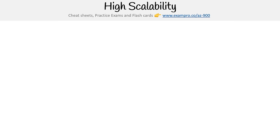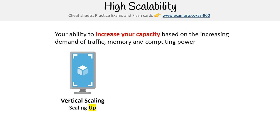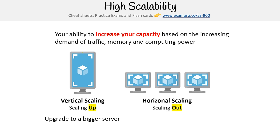High scalability is your ability to increase capacity based on increasing demand of traffic, memory, and computing power. There are two types of scaling. Vertical scaling, or scaling up, means upgrading to bigger servers — bigger hard drives, faster computers. Horizontal scaling, or scaling out, means adding additional servers of the same size. With a load balancer distributing traffic, three servers of the same size can equal the same capacity as one big server.